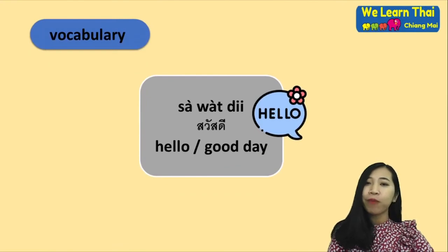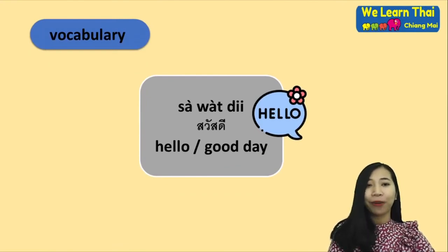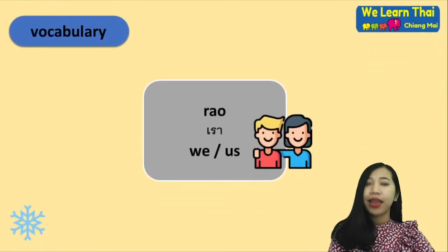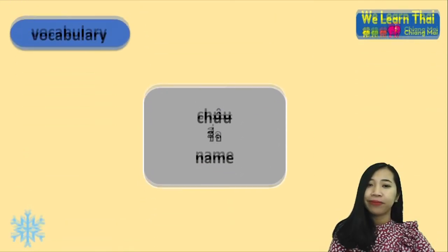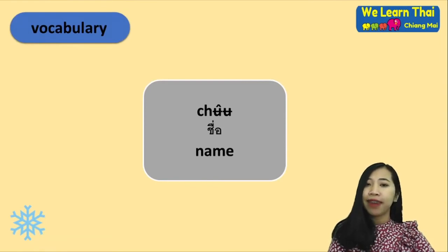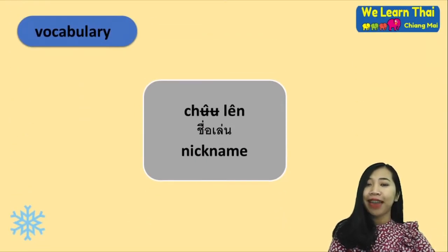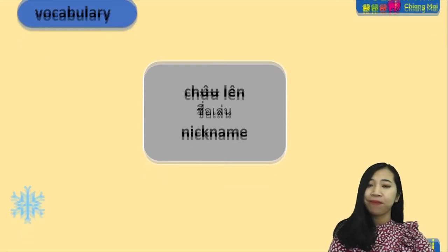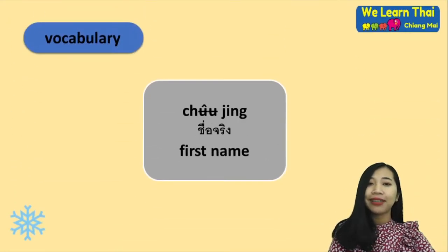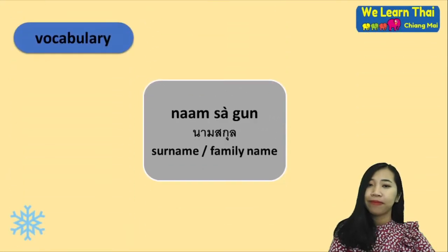For vocabulary: 'Sawasdee' means hello. 'Khao' or 'rao' means 'we' or 'us'. 'Chuu' means name. 'Chuu len' means nickname. 'Chuu jin' means first name. 'Naa sakun' means surname or family name.